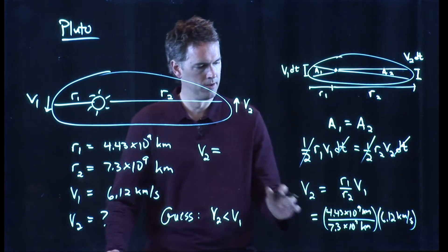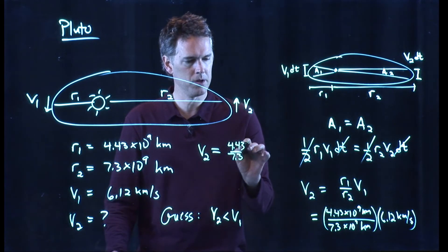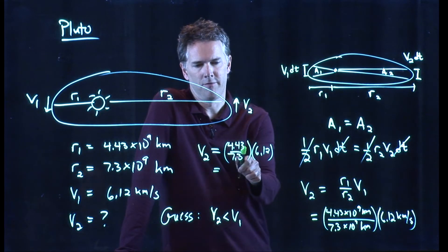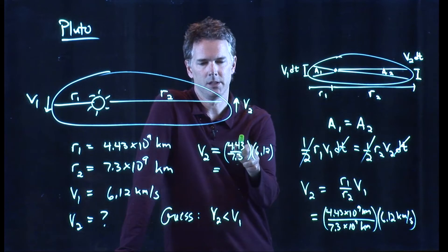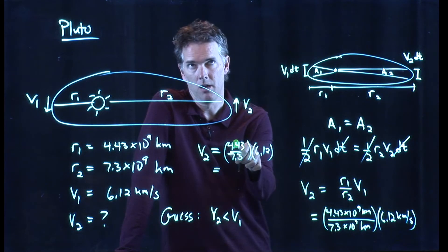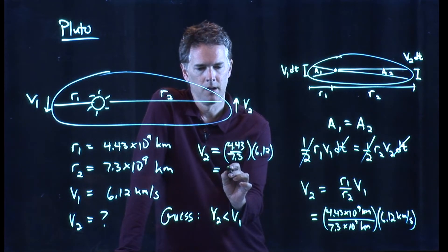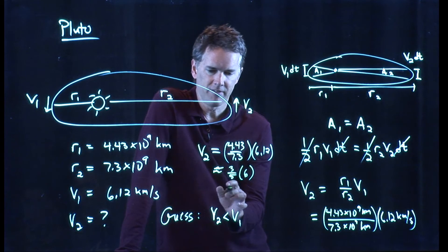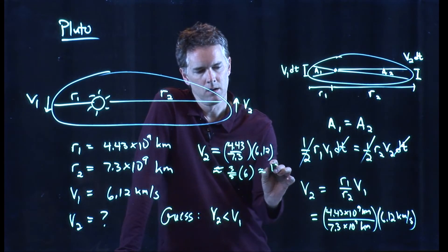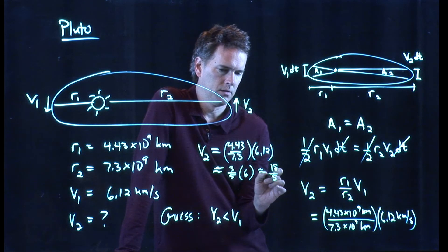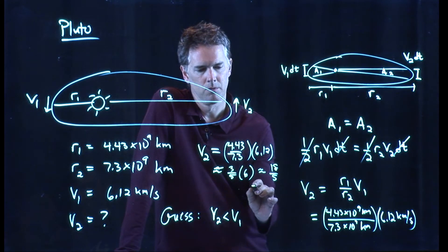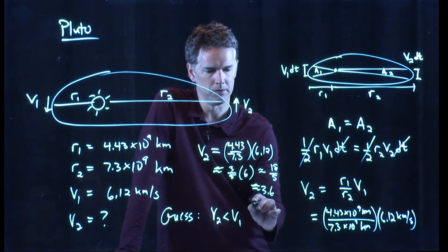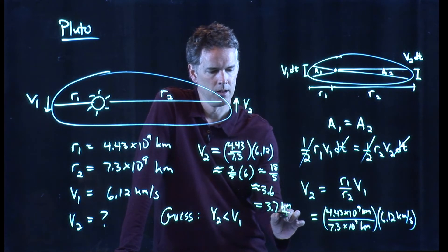I will approximate it here. So we've got 4.43 over 7.3. We're going to multiply that by 6.12. Let's see. This is 4.5 over 7.5, which is, if I divide those by 15, right? That would be 3 over 5. So that's approximately 3 fifths of 6. And 3 fifths of 6 is what? Now that's 18 over 5, which is pretty close to 3.6. Anybody get an answer? 3.7. Alright. So our approximation was pretty good. We get 3.7 kilometers per second.